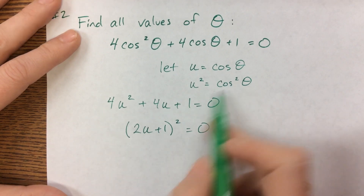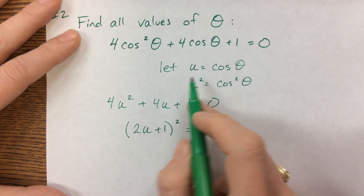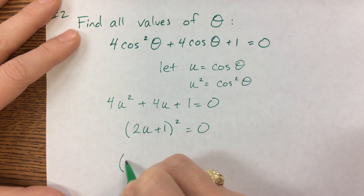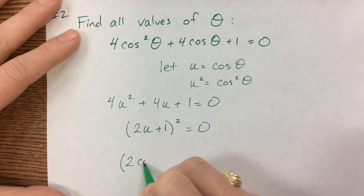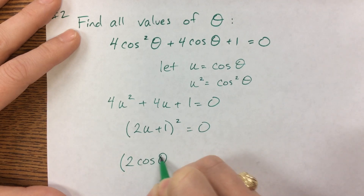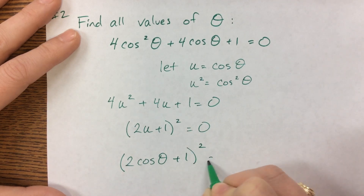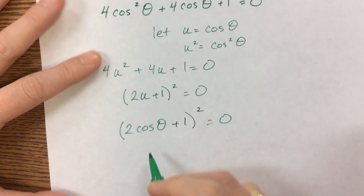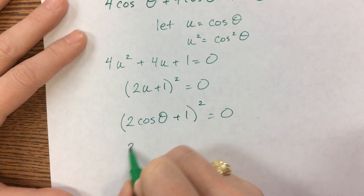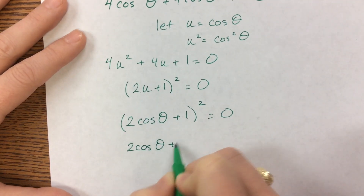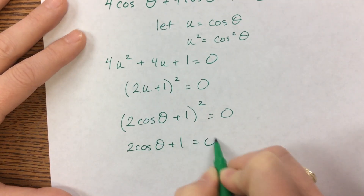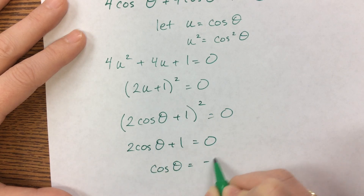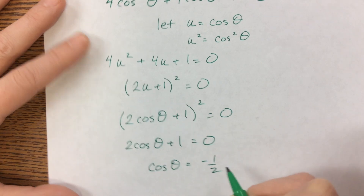So in other words, now I have to come back and put the cosine theta back in. So I have (2 cosine theta + 1) squared equals 0. And that tells us that 2 cosine theta plus 1 has to equal 0. Therefore, cosine of theta will equal negative one half.